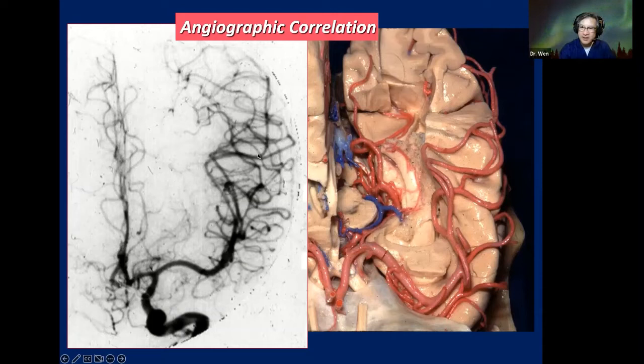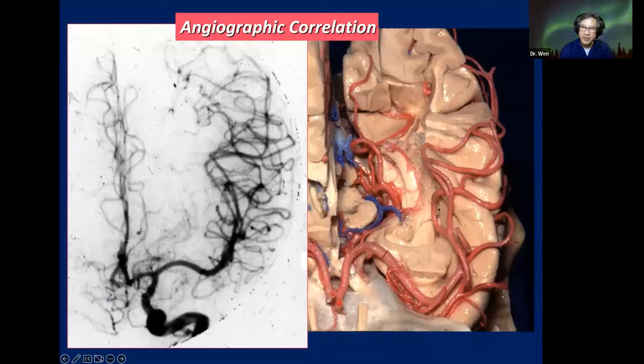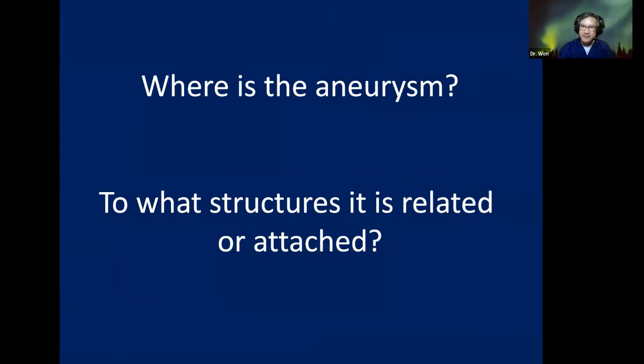What is the difference between these arteries, and why do they all end up at the same location? One is from the anterior cerebral artery, and one is from the MCA — they meet at the anterior parietal sulcus. So, where is the aneurysm? To what structure is it related or attached?